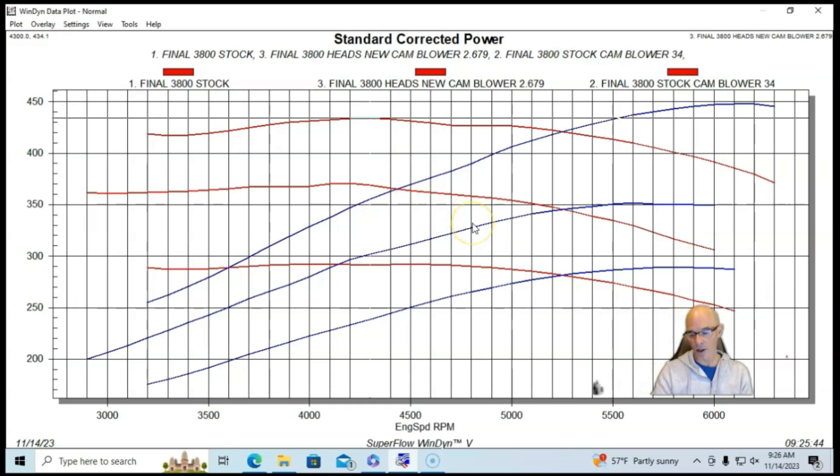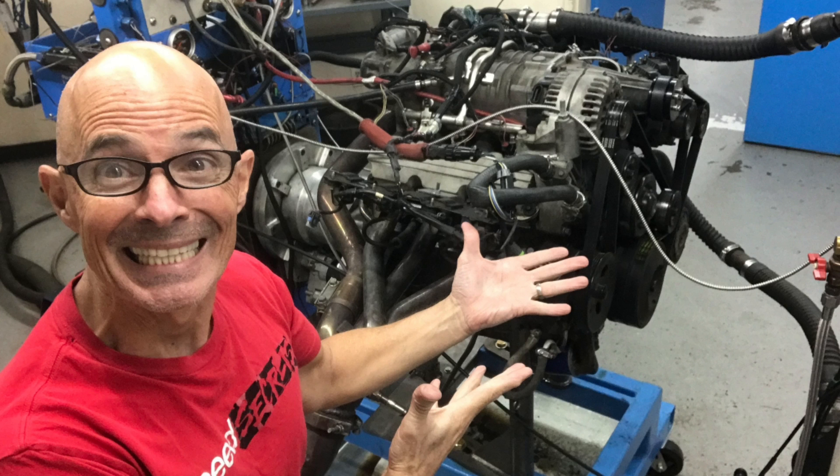But running in this manner, the combination produced 448 horsepower and 434 foot-pounds of torque. So this is what our 2.6 inch pulley and this L32 Gen 5 blower and throttle body did on our 3800. So now let's see what happens when we take that blower off the 3800 and basically put it on a 4.8 liter V8.